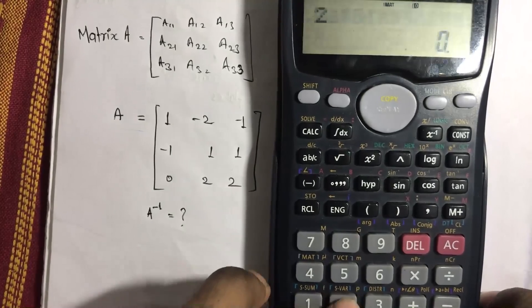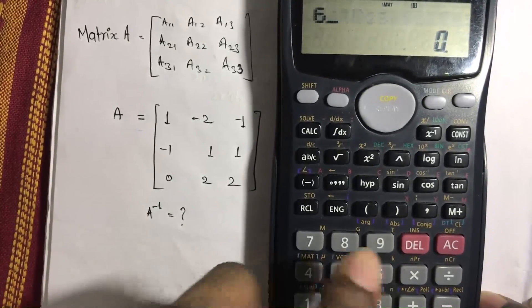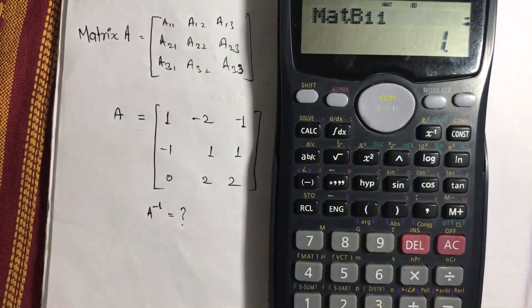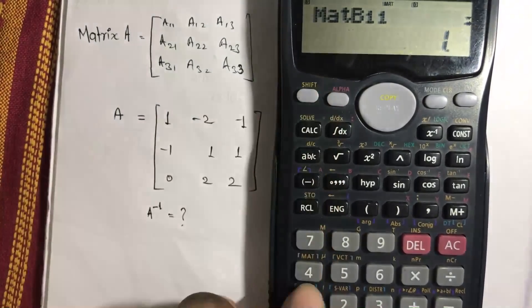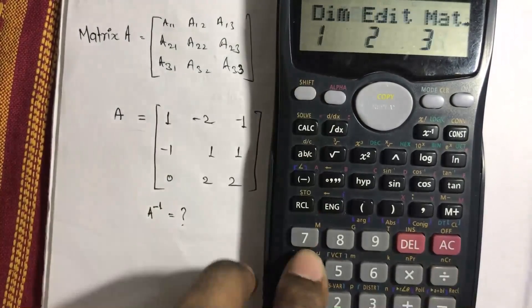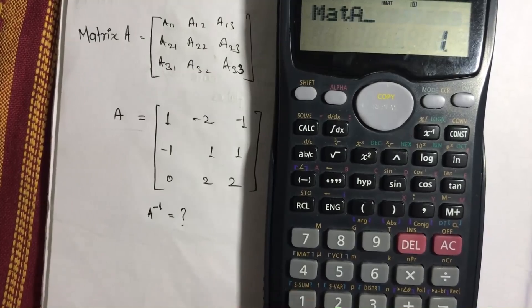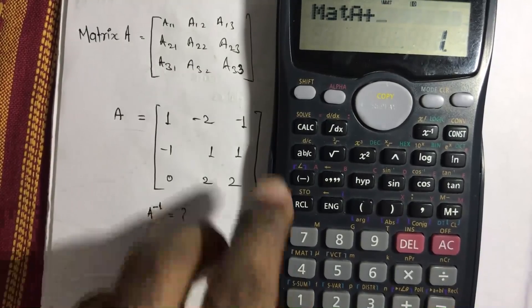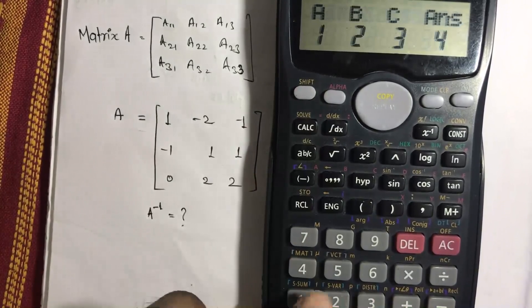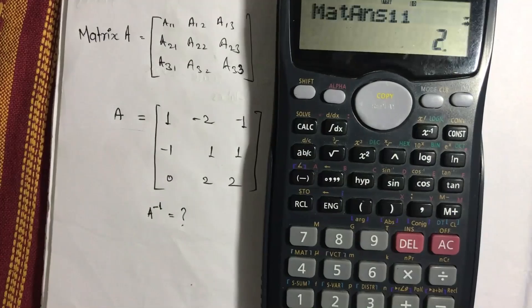Now to add two matrices, just select the matrix first. Go to 3, which is matrix A, matrix plus. Again select the matrix, shift 4, 3, which is matrix B. Yeah, you want to add A and B matrix, just click equals to.